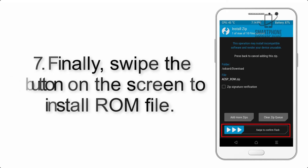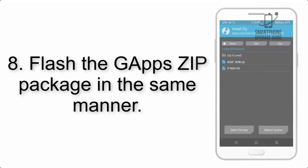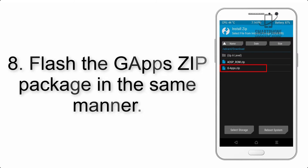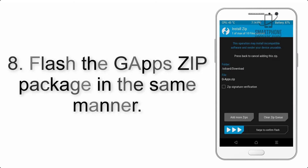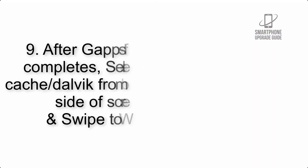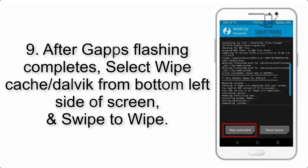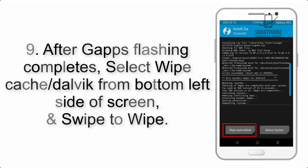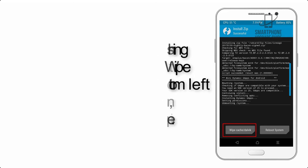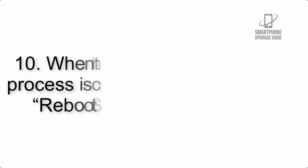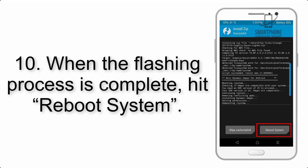Step 8: Flash the GApps zip package in the same manner. Step 9: After GApps flashing completes, select Wipe Cache and Dalvik from the bottom left side of the screen and swipe to wipe. Step 10: When the flashing process is complete, hit Reboot System.